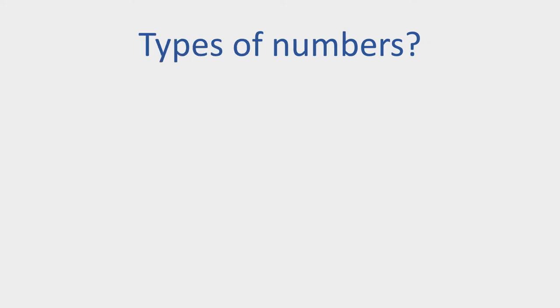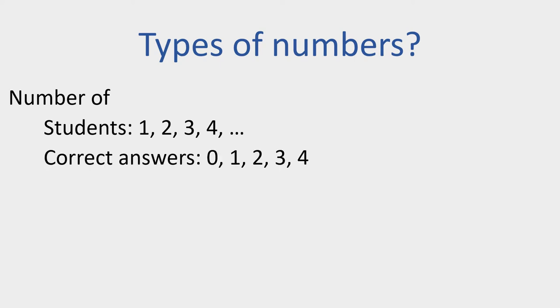How do these give rise to different types of numbers? Let's take the students on a course problem. We might have, one would hope, at least one student. We might have two, three, four, some other number of that form. If we look at the number of correct answers in a multiple choice question paper, we have an additional possibility. We could, in principle, have no correct answers.